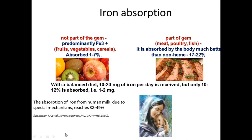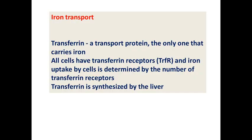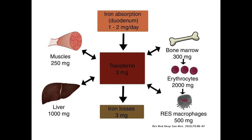Absorption of iron from human milk, due to special mechanisms, reaches 38 to 49 percent. Regarding iron transport — transferrin is the transport protein that carries iron. All cells have transferrin receptors, and iron uptake by cells is determined by the number of transferrin receptors. Transferrin is synthesized by the liver. This transport protein carries absorbed iron and delivers it to the bone marrow.